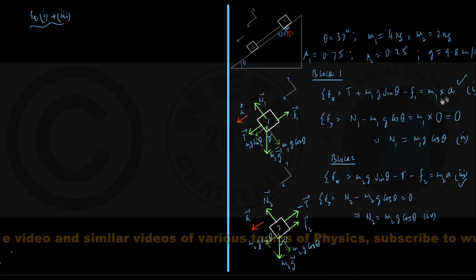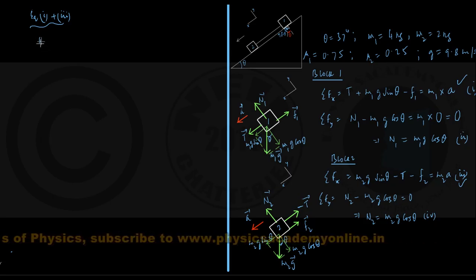On the right hand side I have got m1a plus m2a. Let me write it on the left hand side for convenience. We are having m1 plus m2 inside bracket into a.